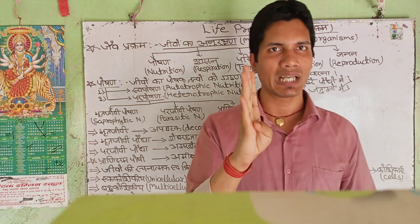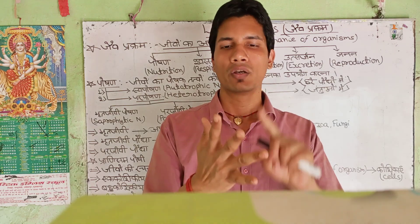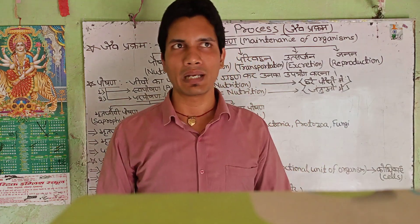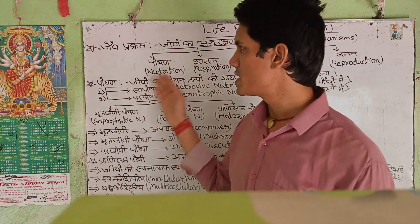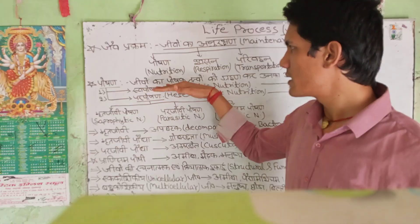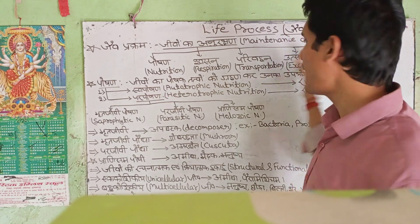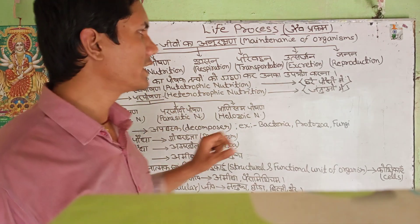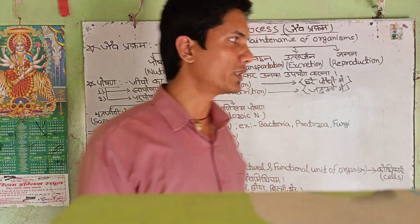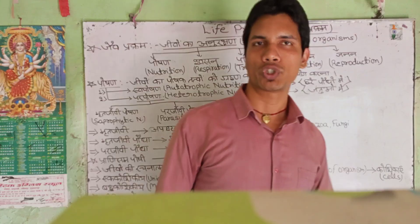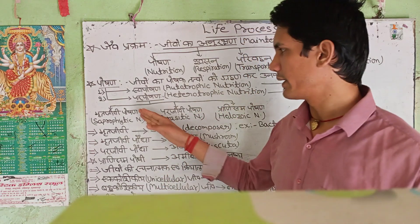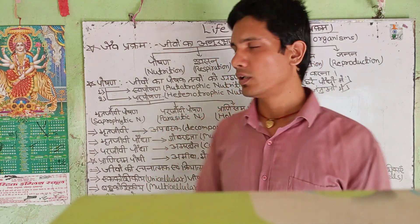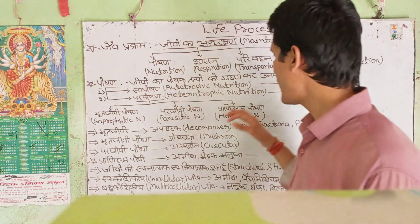The requirements for the first class of nutrition include sunlight, air, water, and chlorophyll. We will study the respiration chapter in detail later. Now we will discuss the types of nutrition. There are three types of nutrition.